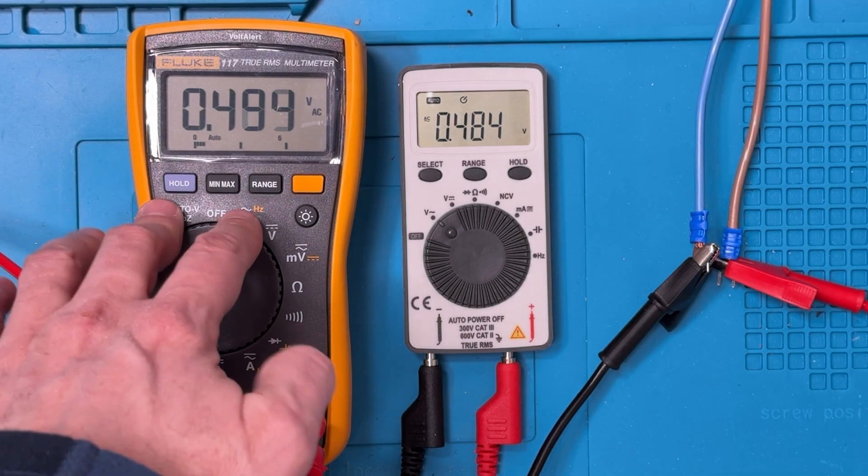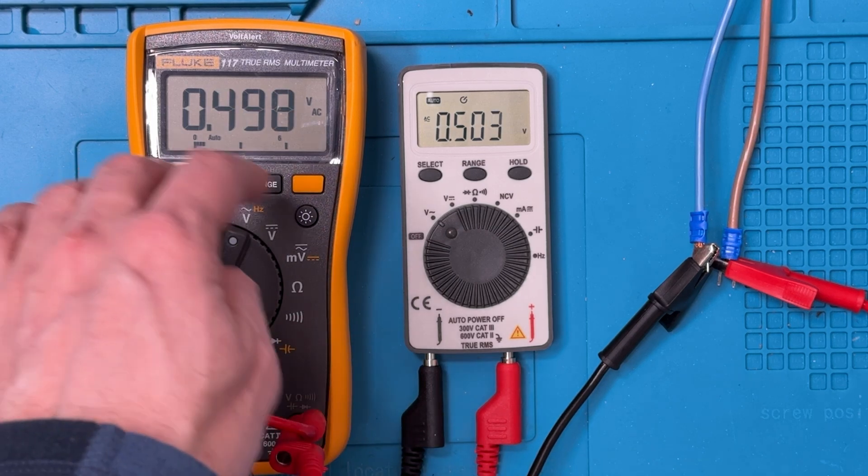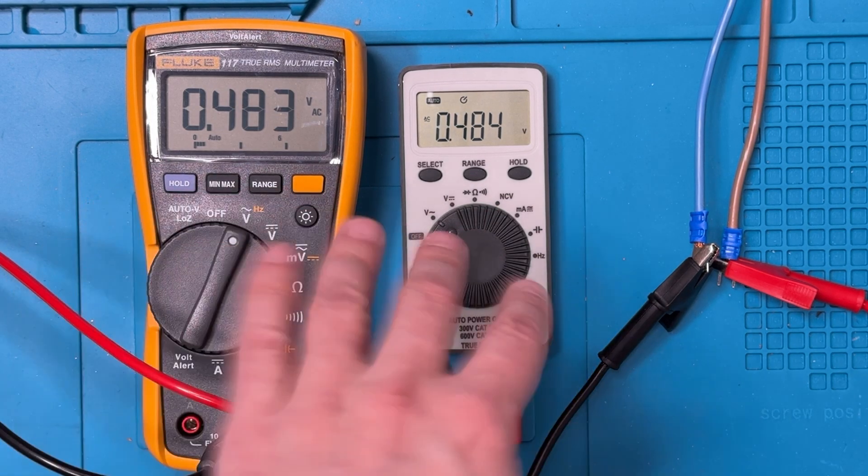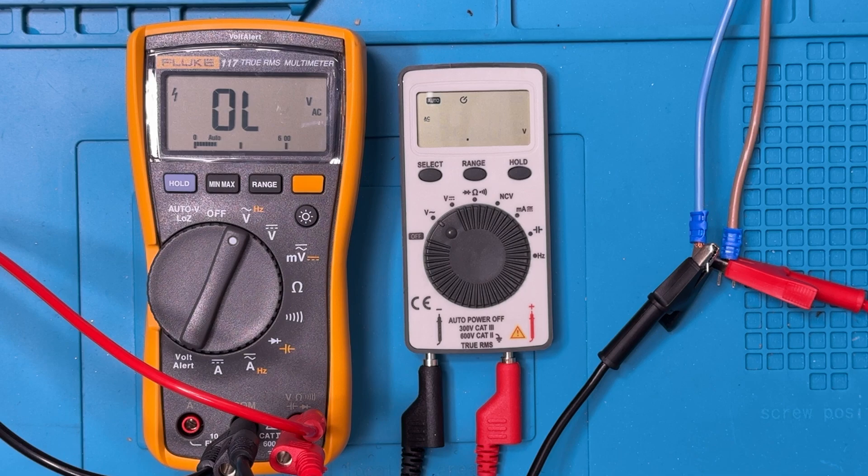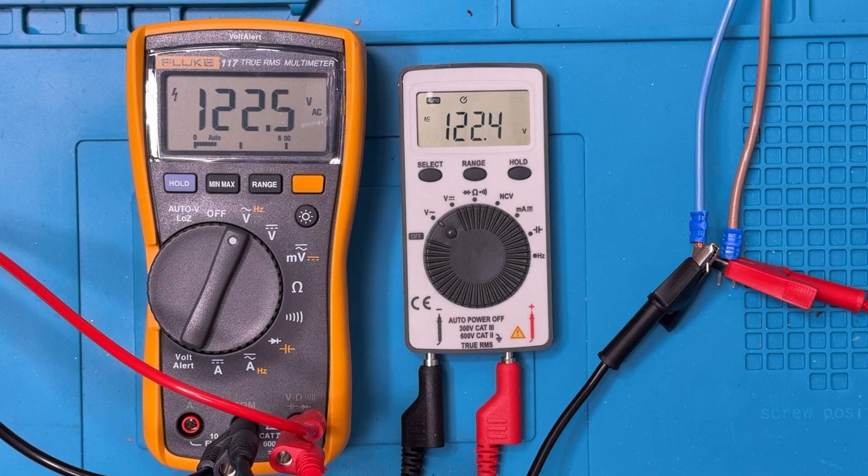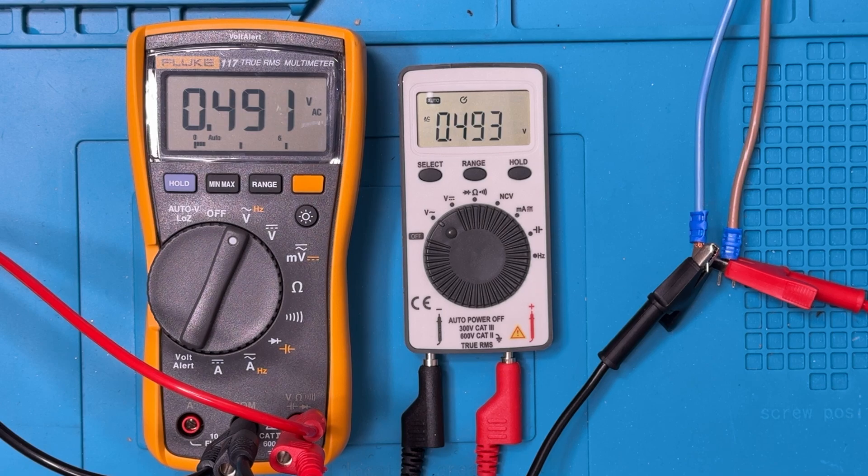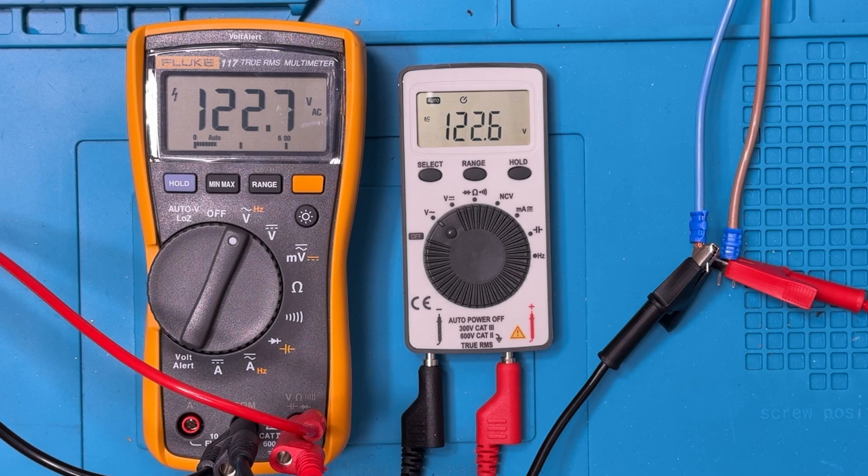For AC volts, I use the Fluke as a comparison. Right now it's connected, but the power's not on. We're seeing ghost voltage on both, but pretty much seeing the same level of ghost voltage. Now I'm going to turn the power on. We're seeing almost exactly the same voltage on the Fluke as we are seeing on the little ANENG. That's a really nice performance for the ANENG for AC volts. It might just be a touch slower to perform, but really nothing to be concerned about. Very good showing.